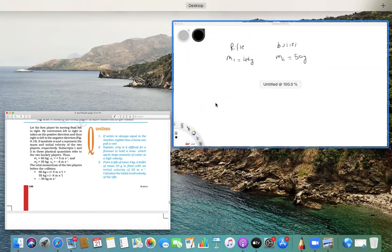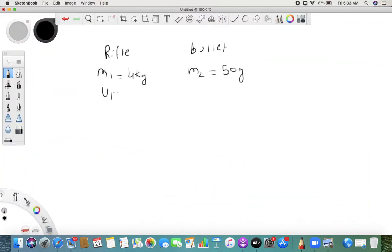Even the rifle is stationary, so it is 0 meters per second, and the bullet is also stationary, that is also 0 meters per second. You need to convert this into kg, so it is 0.05 kg.